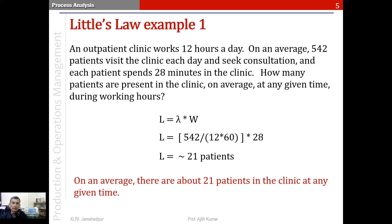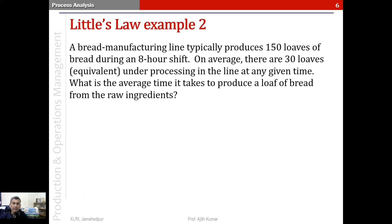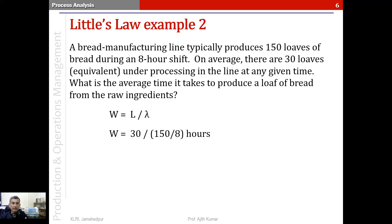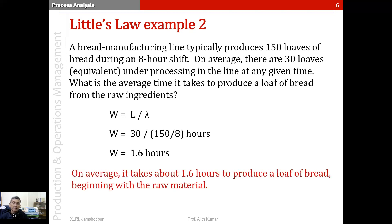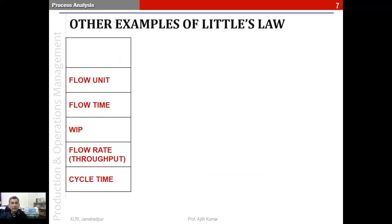This WIP number is useful for planning — for example, how much space or how many chairs to provide for patients. The second example is a bread manufacturing line that produces 150 loaves during an eight-hour shift, with on average 30 loaves being processed at any given time. Using W = L/λ: WIP is 30, flow rate is 150/8 per hour. The lead time comes to 1.6 hours — on average, a loaf of bread takes 1.6 hours to produce from raw materials.